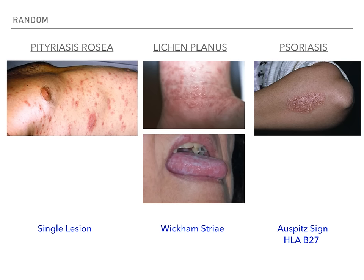For lichen planus, aside from those P words, be familiar with oral white lesions called Wickham striae — white linear lesions on the tongue or sides of the mouth. If you see that combined with a purple rash elsewhere, think Wickham striae and think lichen planus. If you see purple plus oral lesions, they're telling you it's lichen planus.